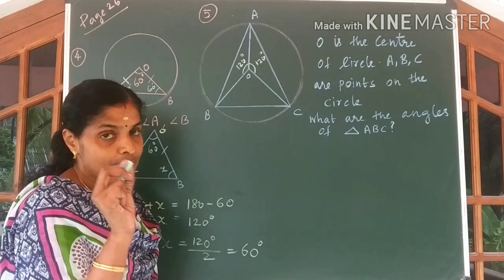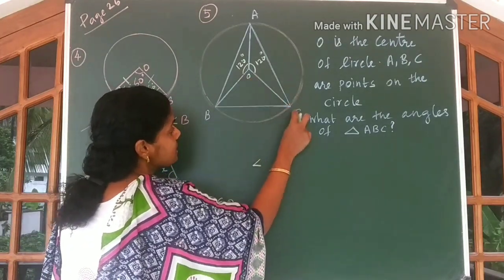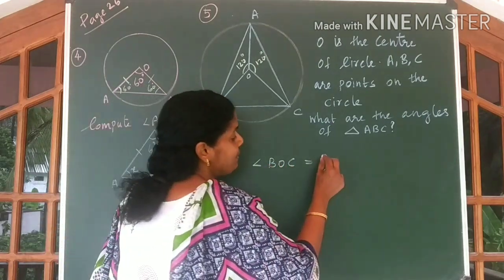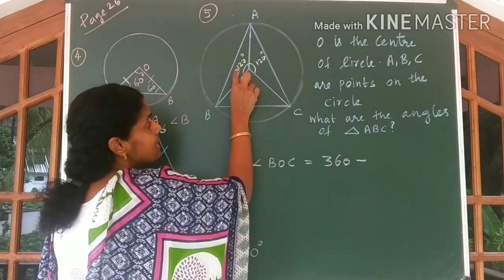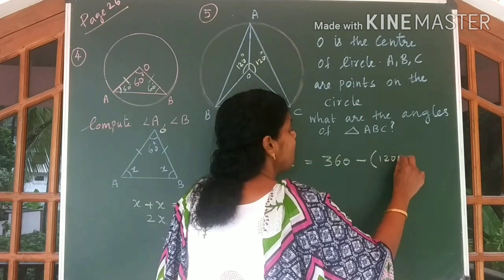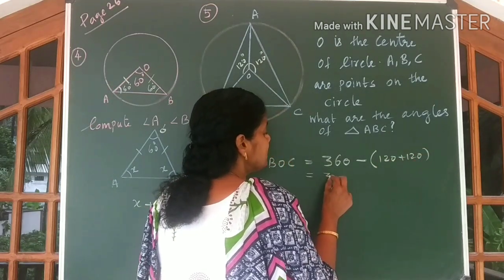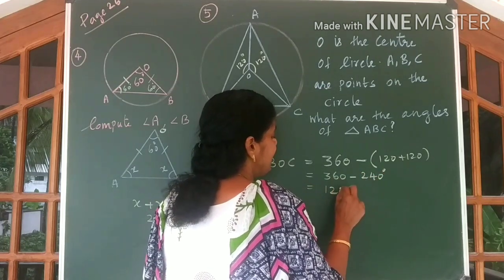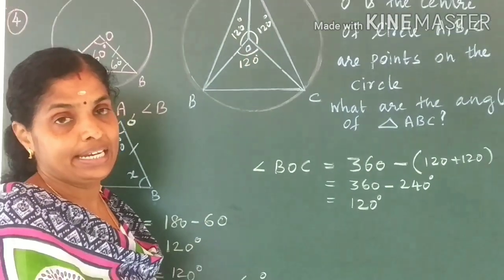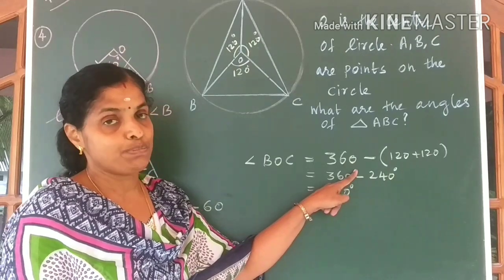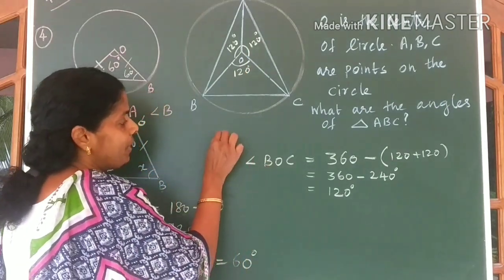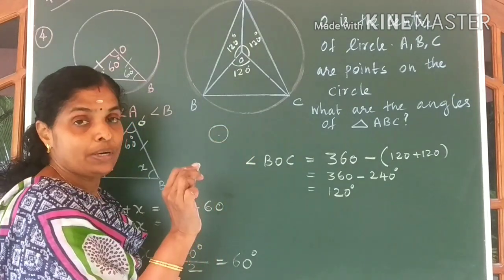First of all, let us find angle BOC. You can get angle BOC easily by subtracting these two angles — subtract the sum of these two angles from 360 degrees. You will get 360 minus (120 plus 120), that is 360 minus 240, which equals 120 degrees. So I got this angle to be equal to 120 degrees. Why did we subtract from 360 degrees? It is because of the angle around a point.